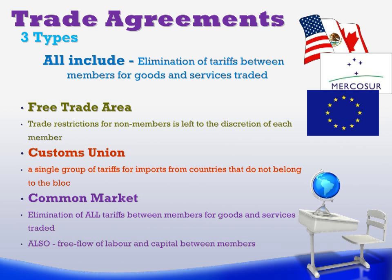This is what we see with NAFTA. Canada, the United States, and Mexico are all in a free trade area — the North American Free Trade Agreement. Therefore, Canada can create free trade agreements with countries all over the world, and it doesn't matter what Mexico or the United States thinks.